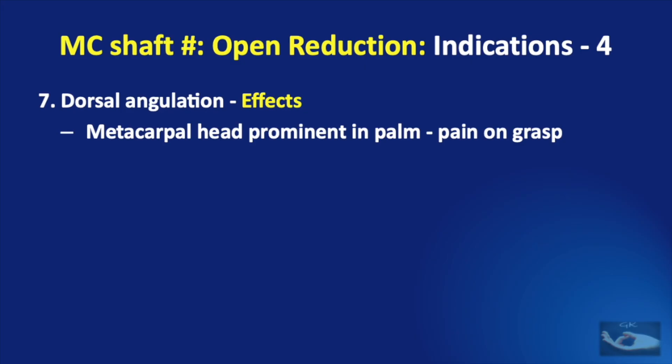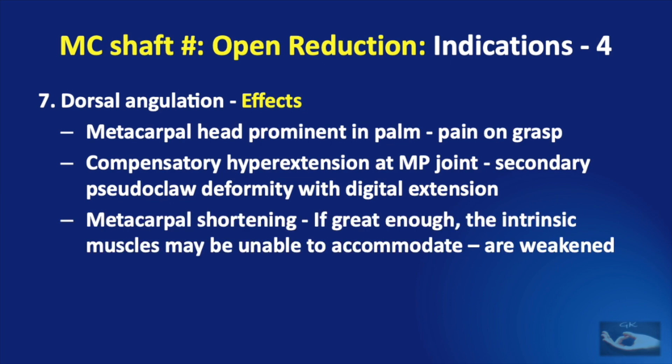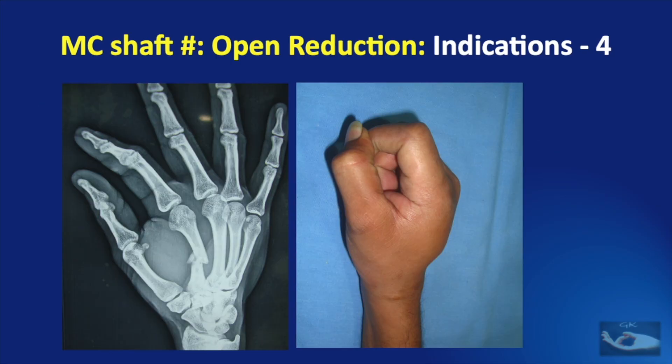Sometimes the metacarpal head may be prominent in the palm, causing pain on grasp. Because of the angulation, there may be a compensatory hyperextension at the metacarpophalangeal joint and a secondary pseudo-claw deformity with digital extension. If the metacarpal shortening due to angulation is great enough, the intrinsic muscles may be unable to accommodate and are weakened. Finally, the dorsal prominence may be aesthetically displeasing, causing a hump on the dorsum of the hand.